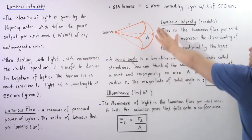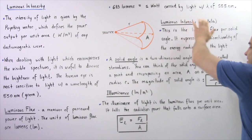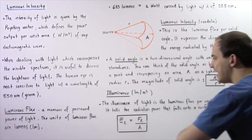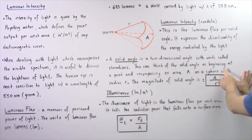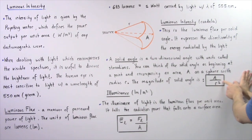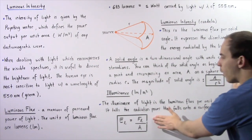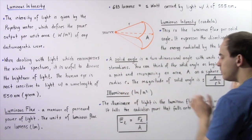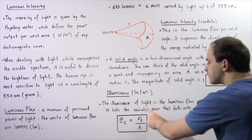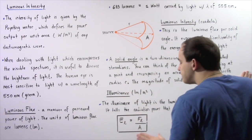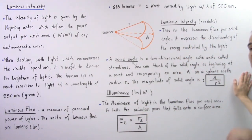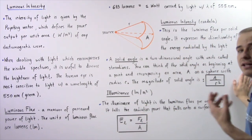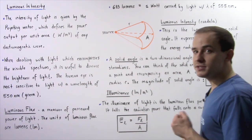The formula for luminous intensity is the luminous flux divided by the area per radius squared, while illuminance is the luminous flux divided by the area on which the light falls.